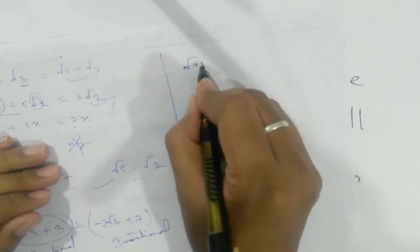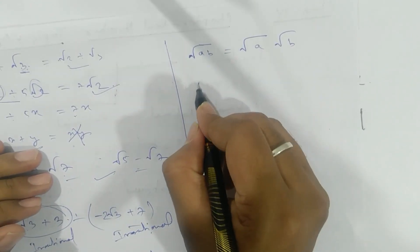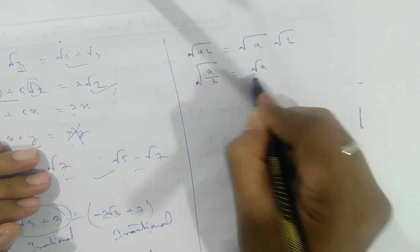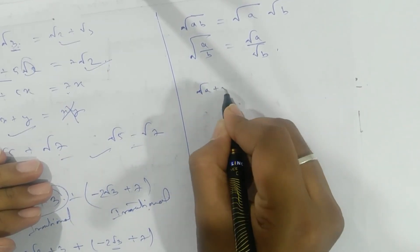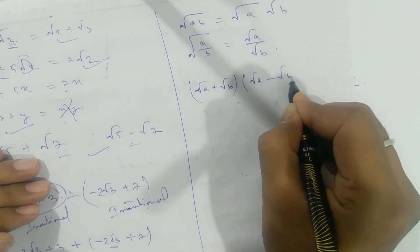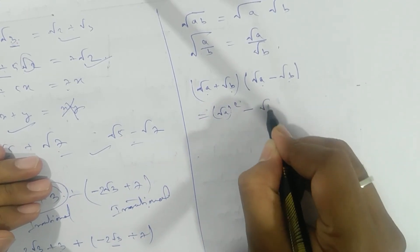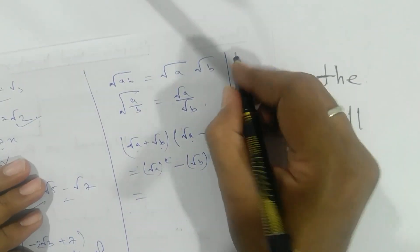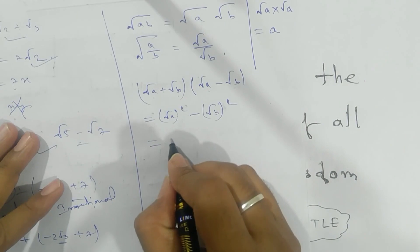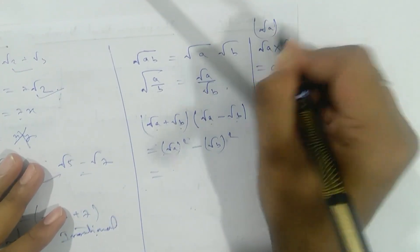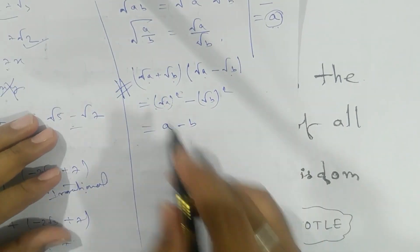For multiplication, we have rules like: √a × √b = √(ab), and √(a/b) = √a / √b. We also have conjugate identities: (√a + √b)(√a − √b) = a − b, using the a²−b² formula. And another important rule: √a × √a = a.